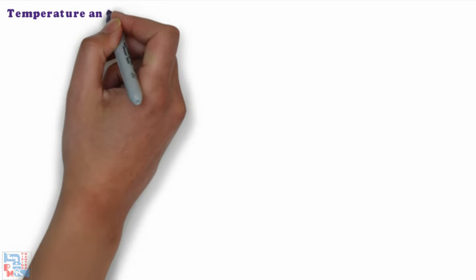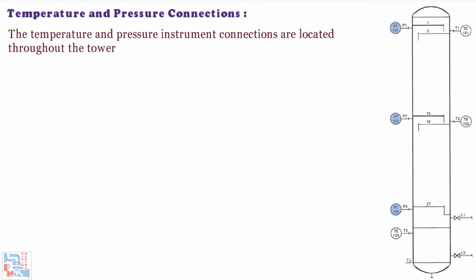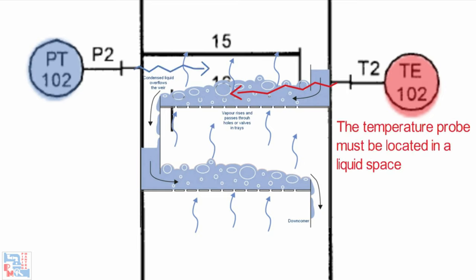Now let's discuss about temperature and pressure instrument connections. The temperature and pressure instrument connections are located throughout the tower. The temperature probe must be located in a liquid space and the pressure connection in a vapor space.